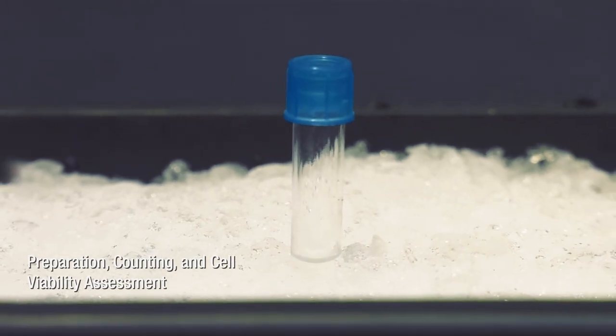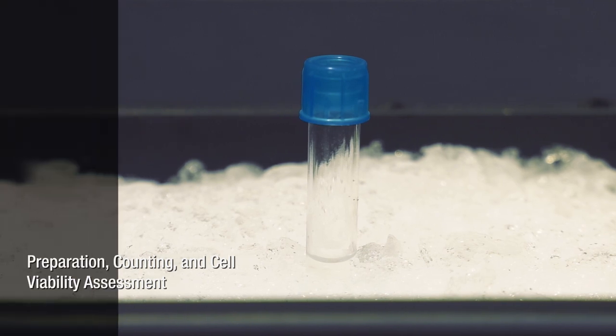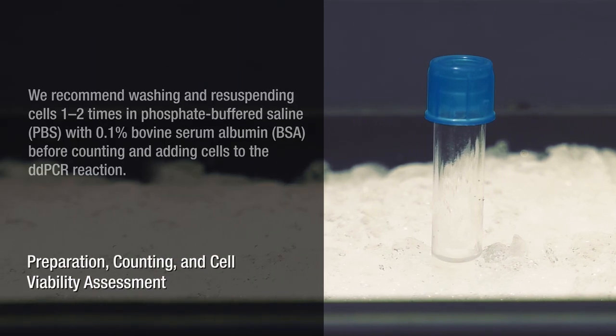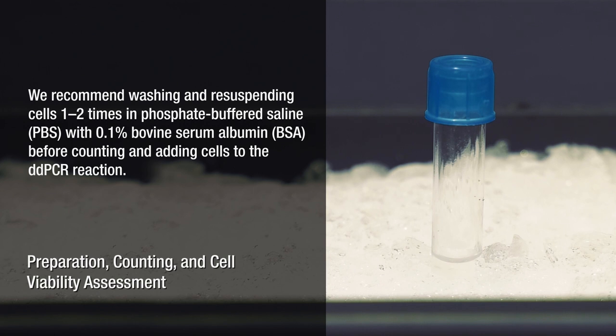First, prepare your cells. Fresh or frozen eukaryotic cells and nucleosomal preparations may be used. We recommend washing and resuspending cells one to two times in phosphate-buffered saline with 0.1% bovine serum albumin before counting and adding cells to the DDPCR reaction.